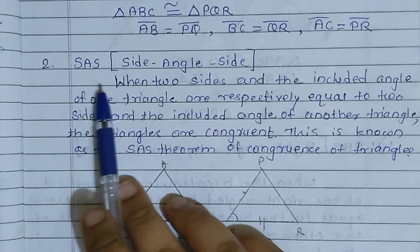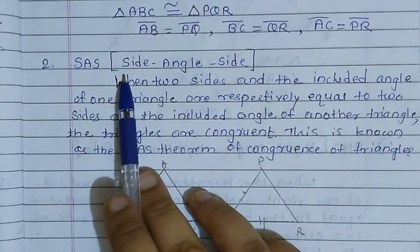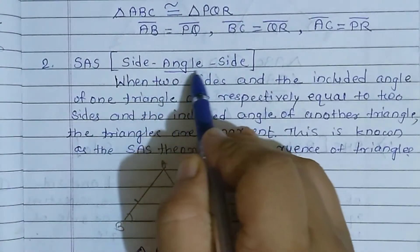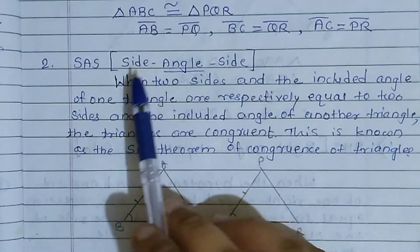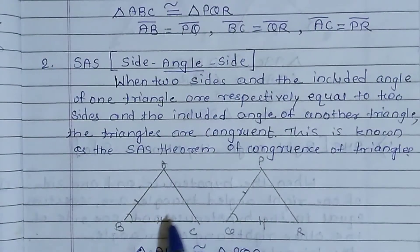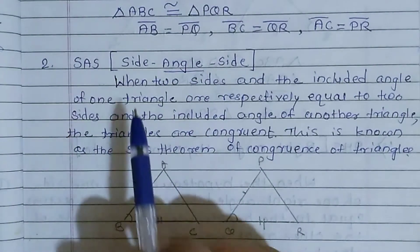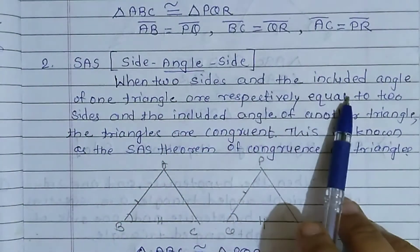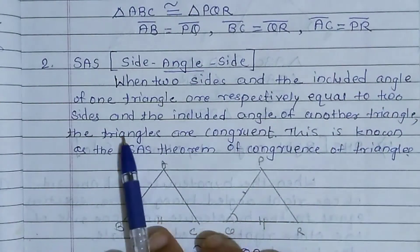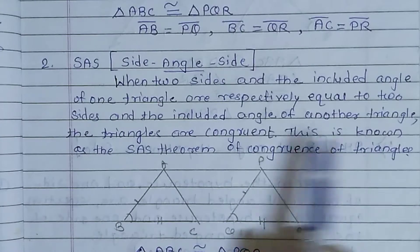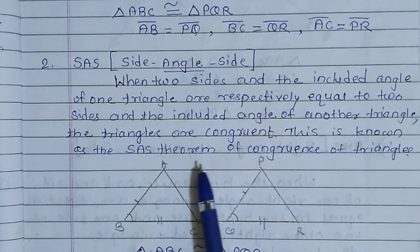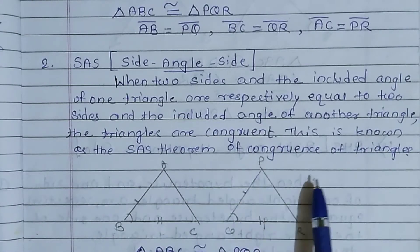Second is SAS — side, angle, side. This angle is written in the middle, and it has a meaning: two sides and the included angle should be the same. When two sides and the included angle of one triangle are respectively equal to two sides and the included angle of another triangle, the triangles are congruent. This is known as the SAS theorem of congruence of triangles.